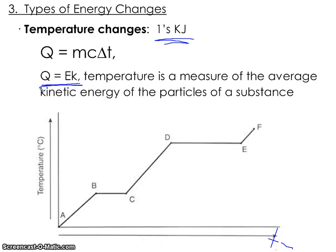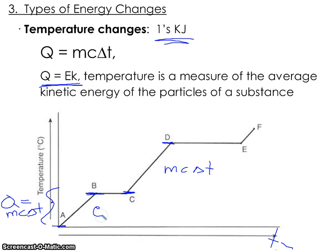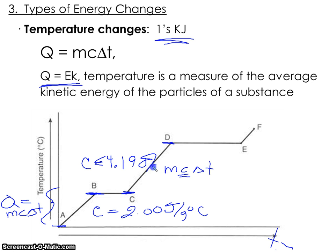The heating curve from Science 10 shows sections where there is a temperature change — we use MCΔt to find the energy for those sections. The only difference between the solid and liquid sections is the specific heat capacity: the specific heat capacity of ice is 2.00 J/g°C, and the specific heat capacity of water is 4.19 J/g°C. When calculating energy, you just have to consider what the substance is and what its specific heat capacity is.